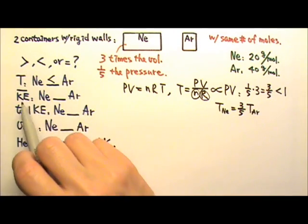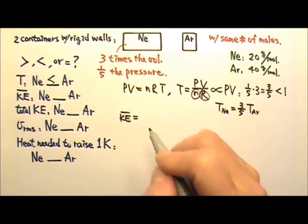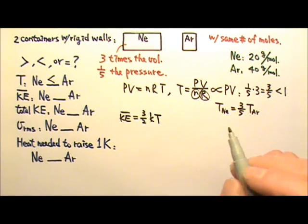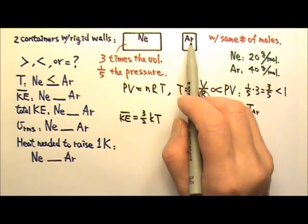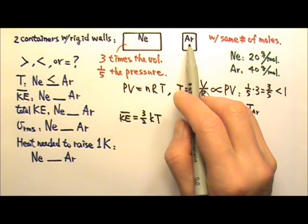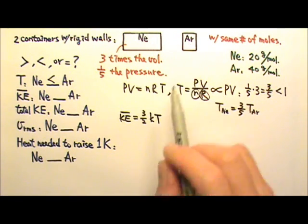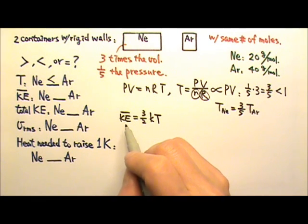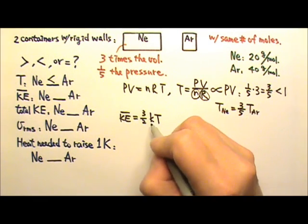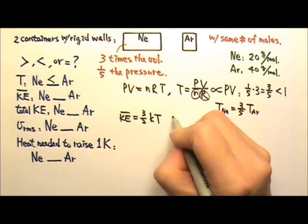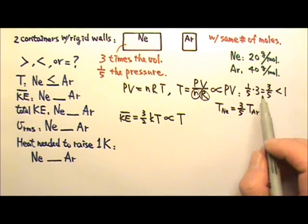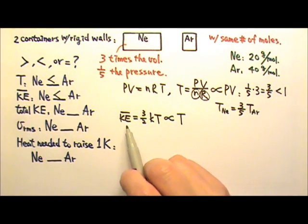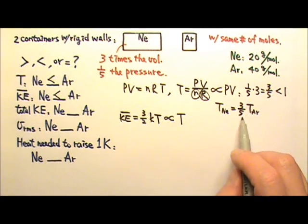For average kinetic energy: the average translational kinetic energy is three-halves kT. For neon and argon, they are monatomic ideal gases — they only have translational kinetic energy; they don't have vibrational or rotational kinetic energy. So three-halves kT is all the kinetic energy they have, making it also the average kinetic energy per molecule. Since the Boltzmann constant is fixed, average kinetic energy is proportional to temperature. Because neon has a lower temperature, it has less average kinetic energy — specifically, three-fifths that of argon.